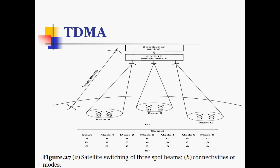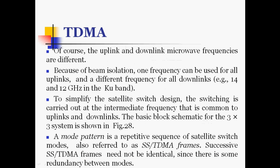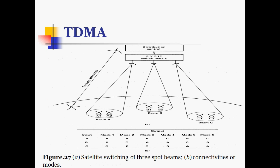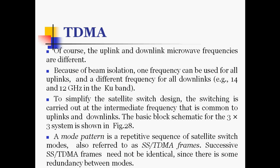The three spot beam antennas cover areas A1 and A2 for beam A, B1 and B2 for beam B, and correspondingly for beam C. Because beam isolation is used, one frequency can be used for all uplinks and a different frequency for all downlinks. To simplify the satellite switch design, switching is carried out at the intermediate frequency common to both uplinks and downlinks. The basic block diagram for the 3×3 switch matrix is shown here.